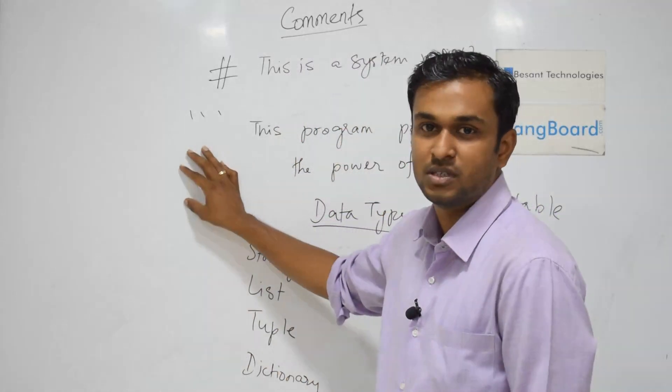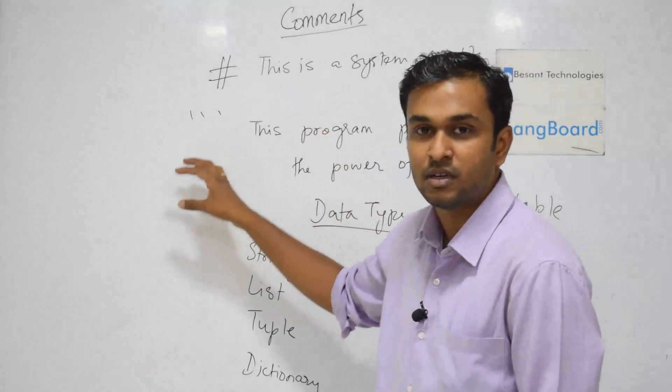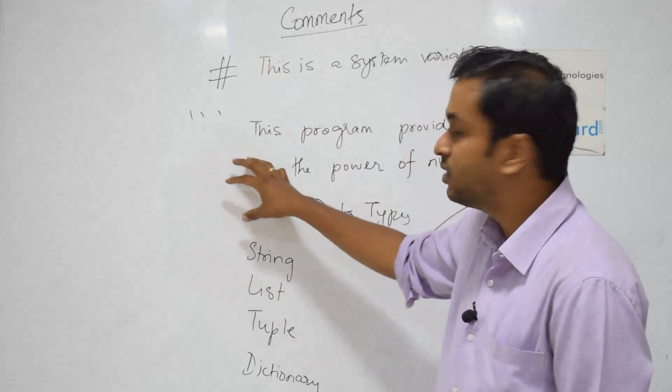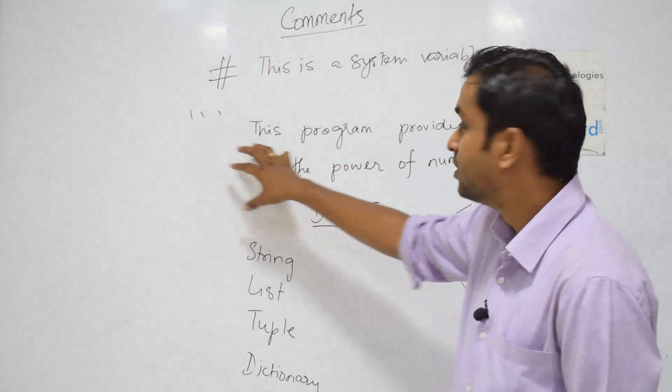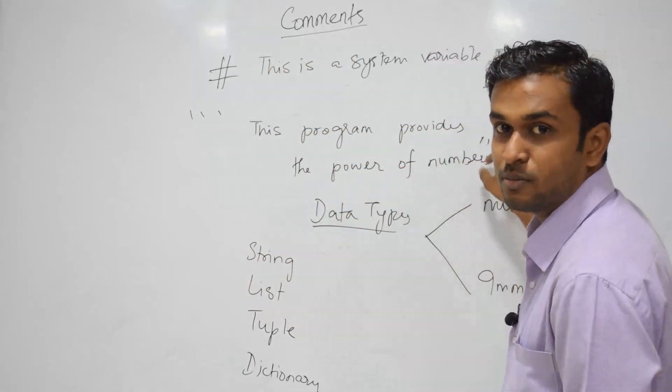We can use a description at the top of the script. As a general practice, at the top of the script, we write triple quotes. This program provides the power of some numbers. So, we can use triple quotes.